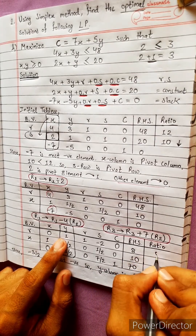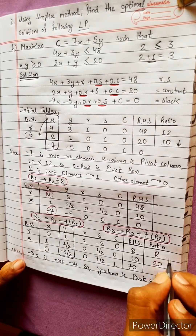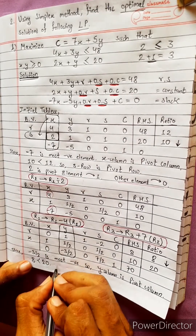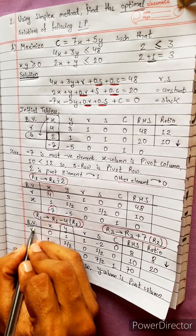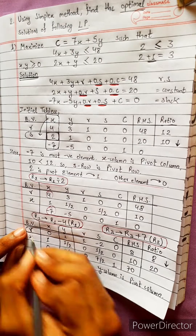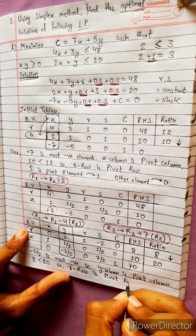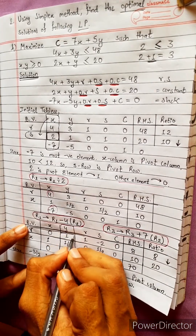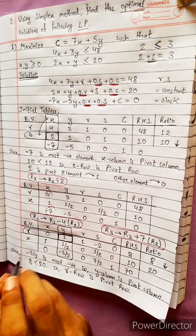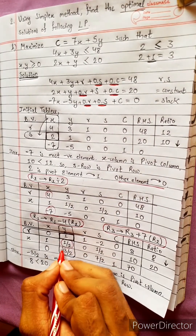8 divided by 1 is 8. 10 divided by 1 by 2: 10 into 2 equals 20. 8 is less than 20.